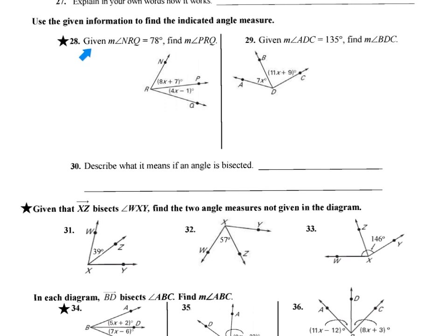For 28, it says, given that angle nRQ equals 78 degrees, find the measure of angle PRQ. So the first thing we want to do is figure out where is nRQ. So we trace on our diagram, starting at n, going to R, and then going to Q. Everything between those two green lines is 78 degrees.